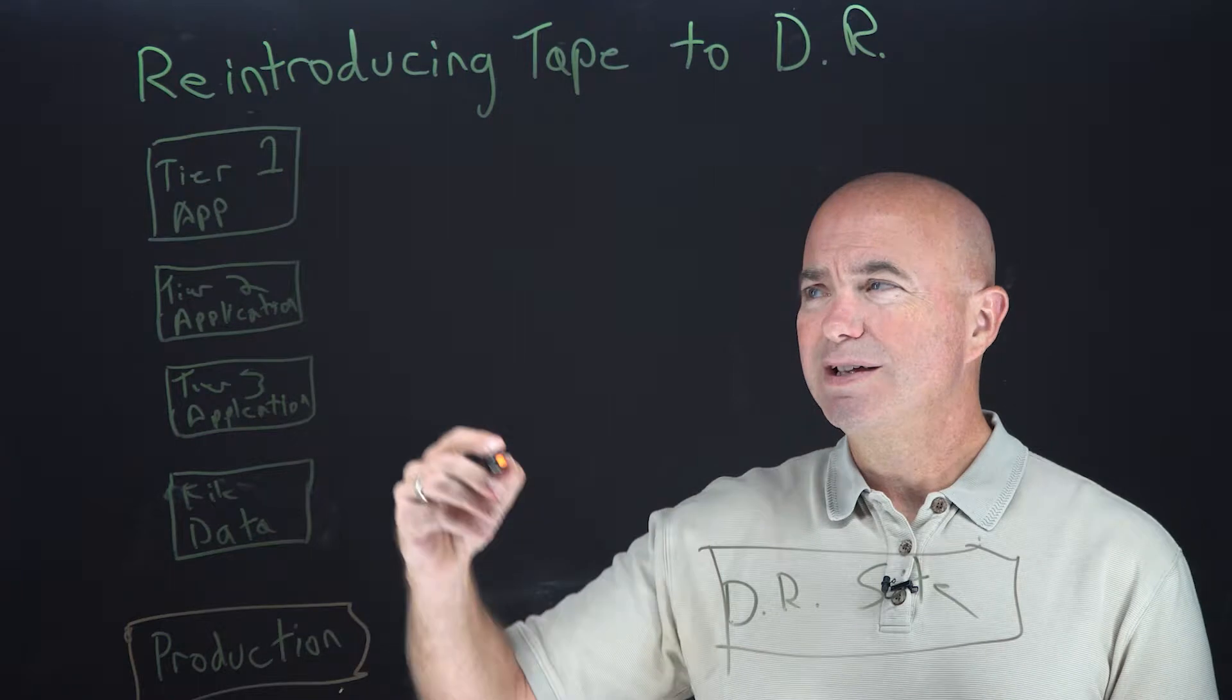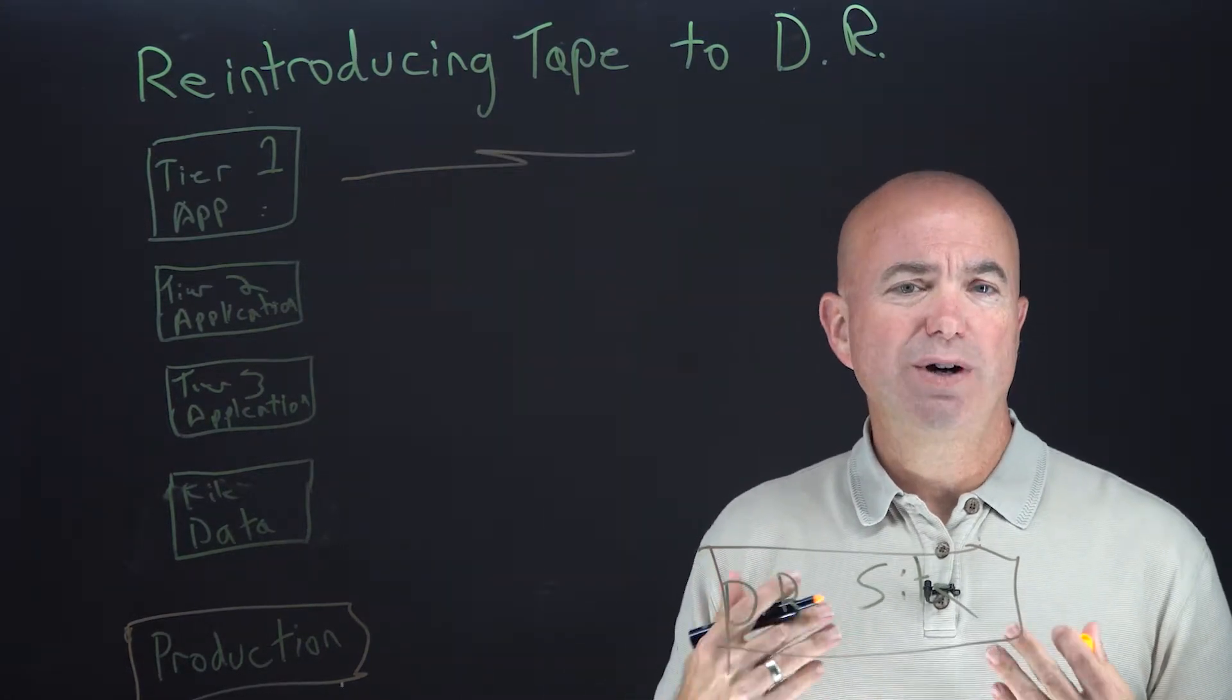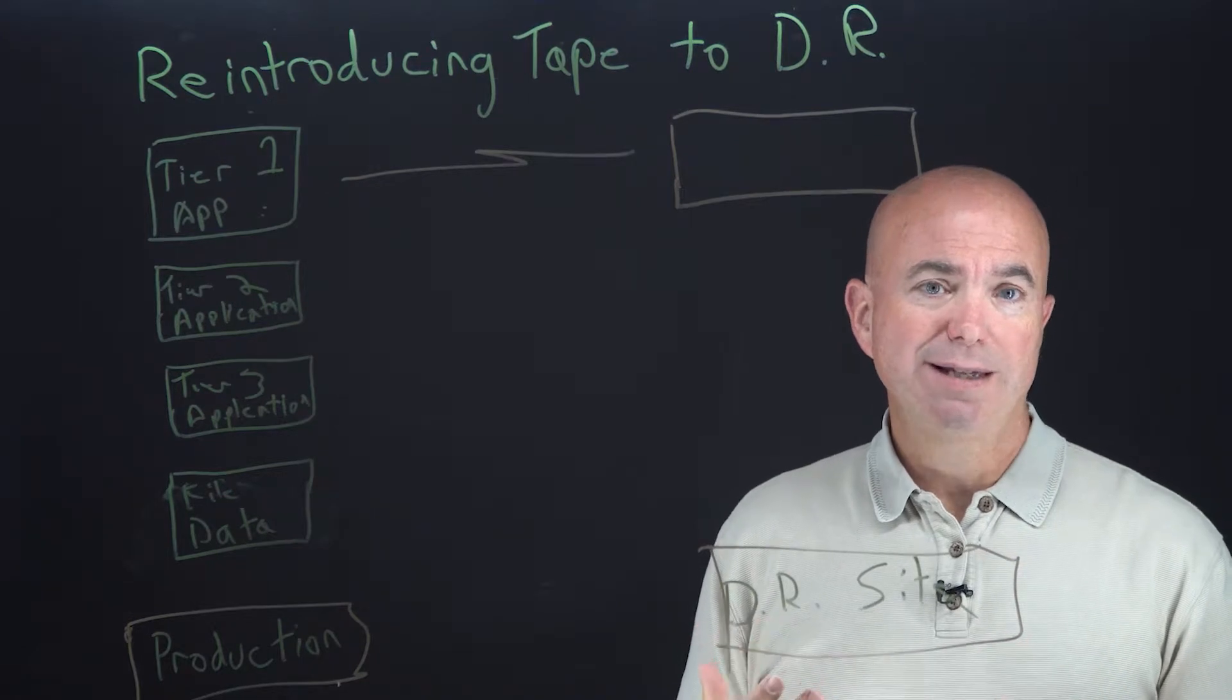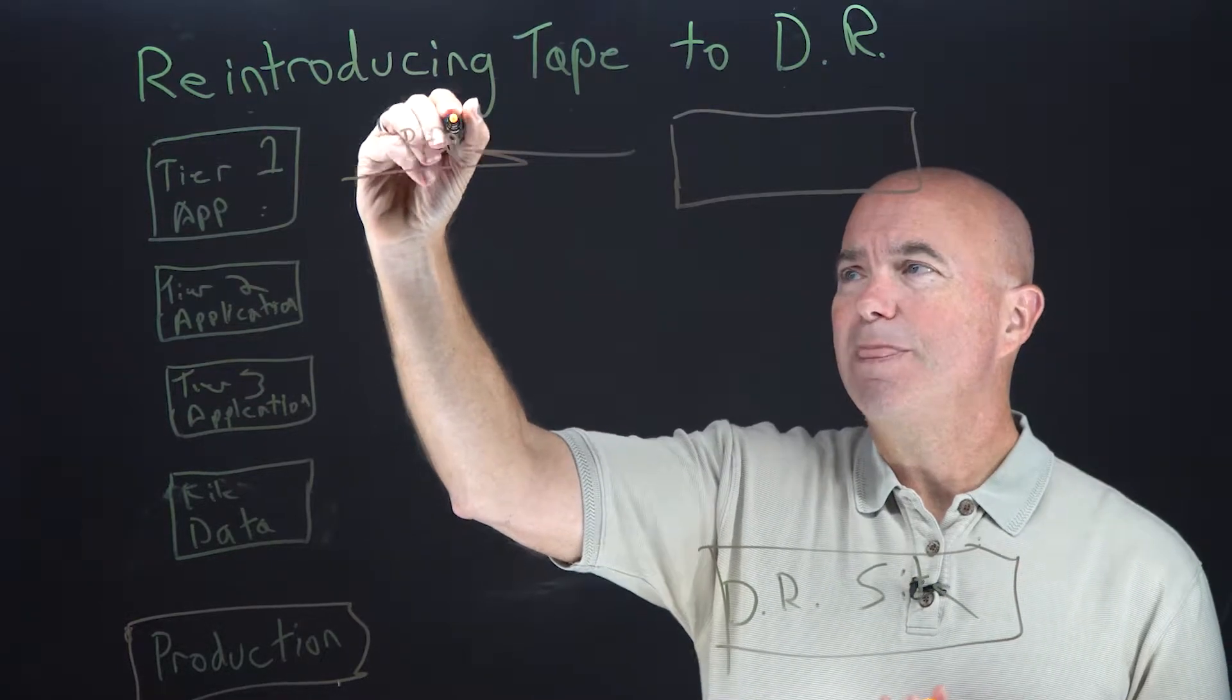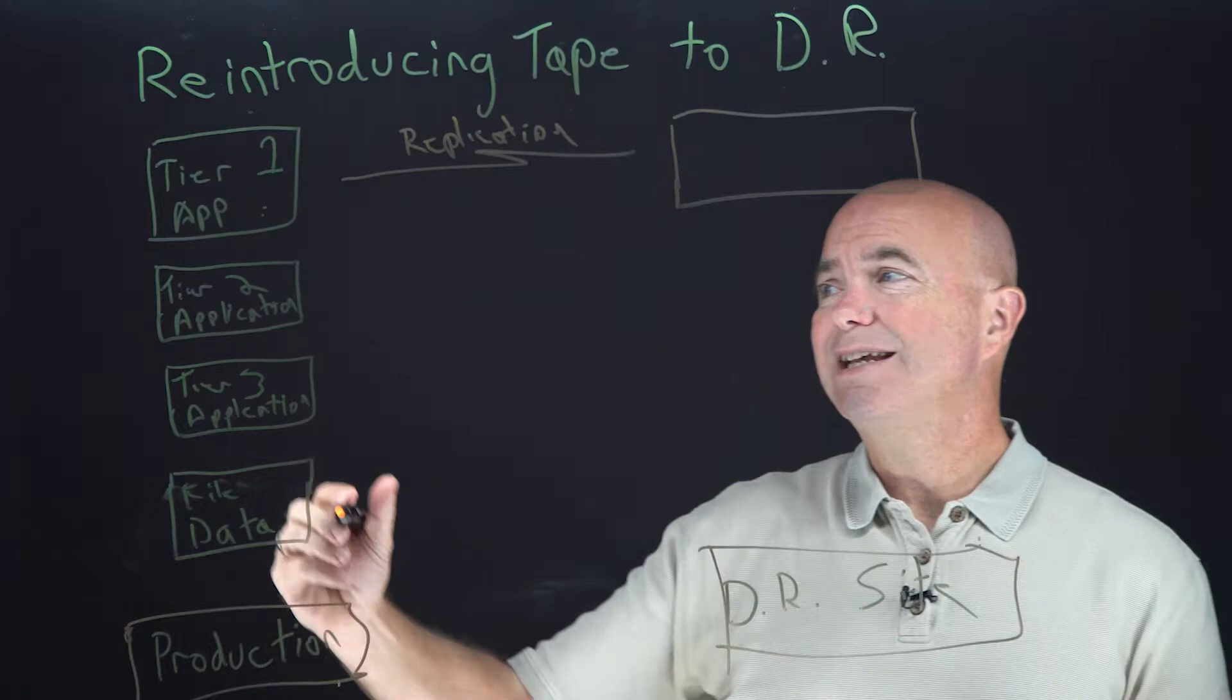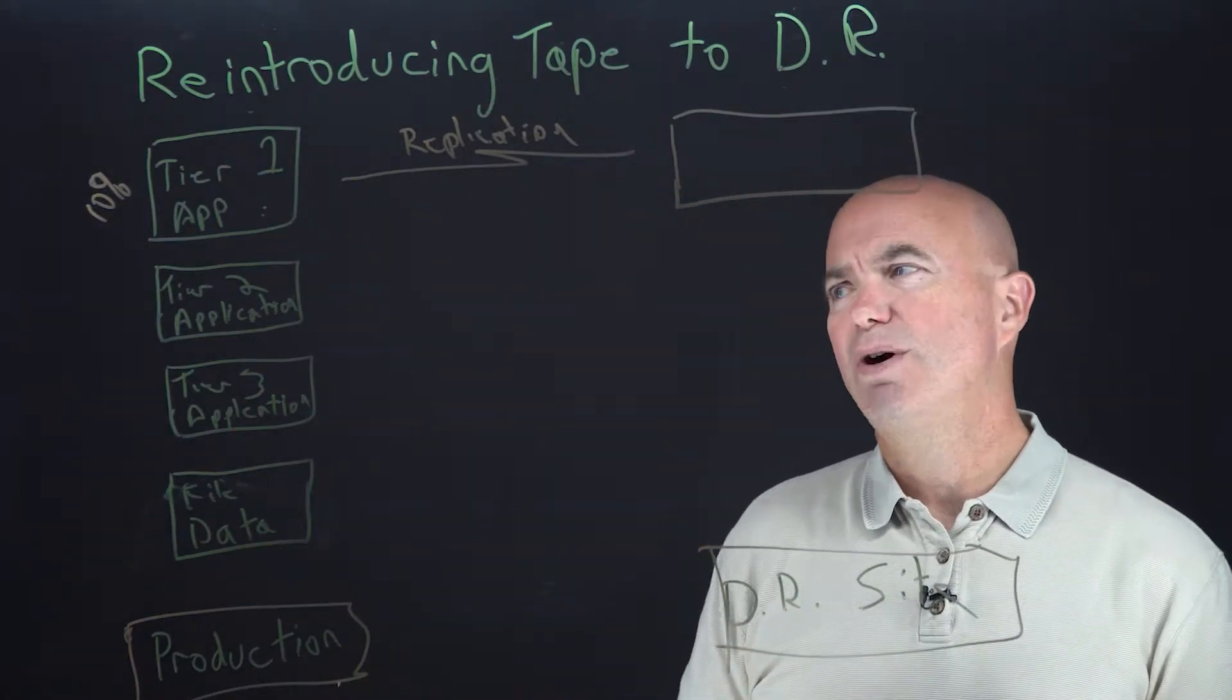Let's talk about how we would protect each one of these. Since tier one applications have to come up and running almost instantly, we're probably going to be using some sort of synchronous or asynchronous replication directly into the DR site. More than likely, there's application servers sitting there running, ready to go. This is a replication job and probably not an area where tape plays a big role. But as far as a total data set, this is generally speaking about 10% or less of the total data within the data center, so it's actually a relatively small amount.